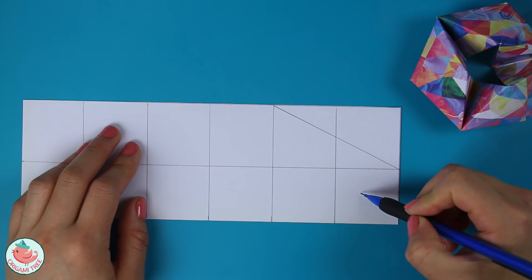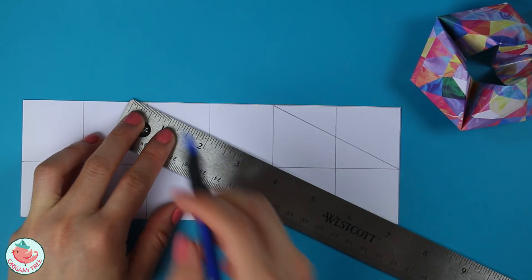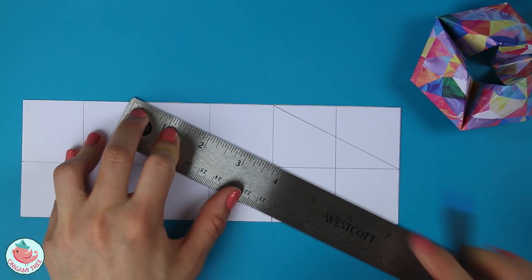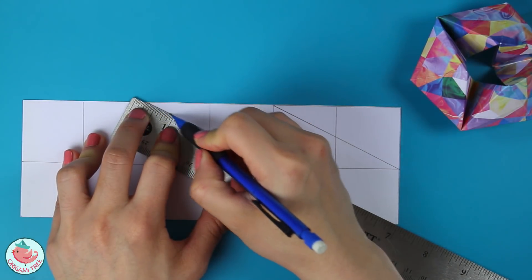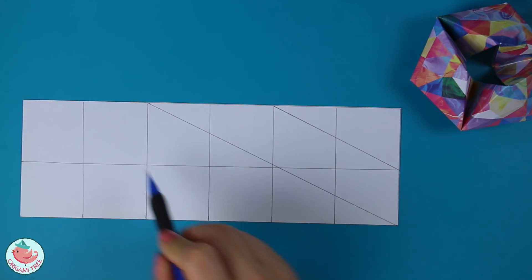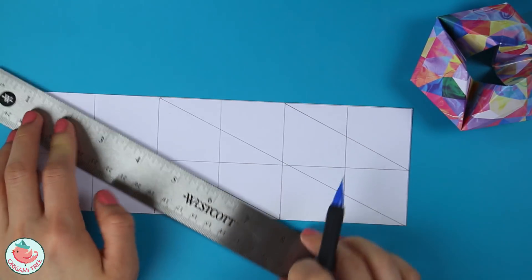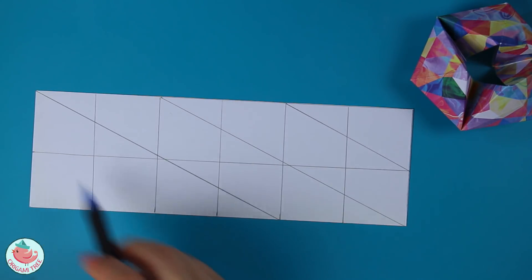The next line is going to run across this one, this one, this one, and that one. Put your ruler from this corner to this corner and draw a line straight across. Now let's draw one across these four squares. Let's draw one from here to here.